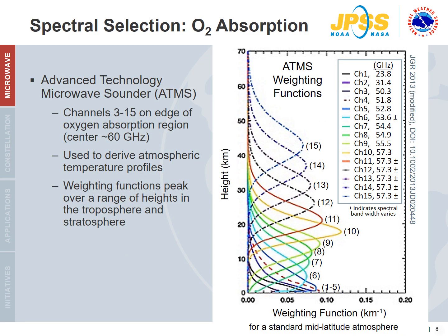Weighting functions from the Advanced Technology Microwave Sounder, which will be described in a later module, for channels 1–15 are shown for a standard mid-latitude atmosphere. Channels 1 and 2 fall in a window region that senses near the surface. Channels 3–15 are located along the oxygen absorption region centered at 60 GHz and are used in measuring temperature over a range of heights in the troposphere and stratosphere. Channel 3 at 50 GHz is farthest on the edge of the absorption region where it is sensing closer to the surface. The remaining channels have frequencies approaching the center, where oxygen absorption is strongest and the atmosphere is opaque.